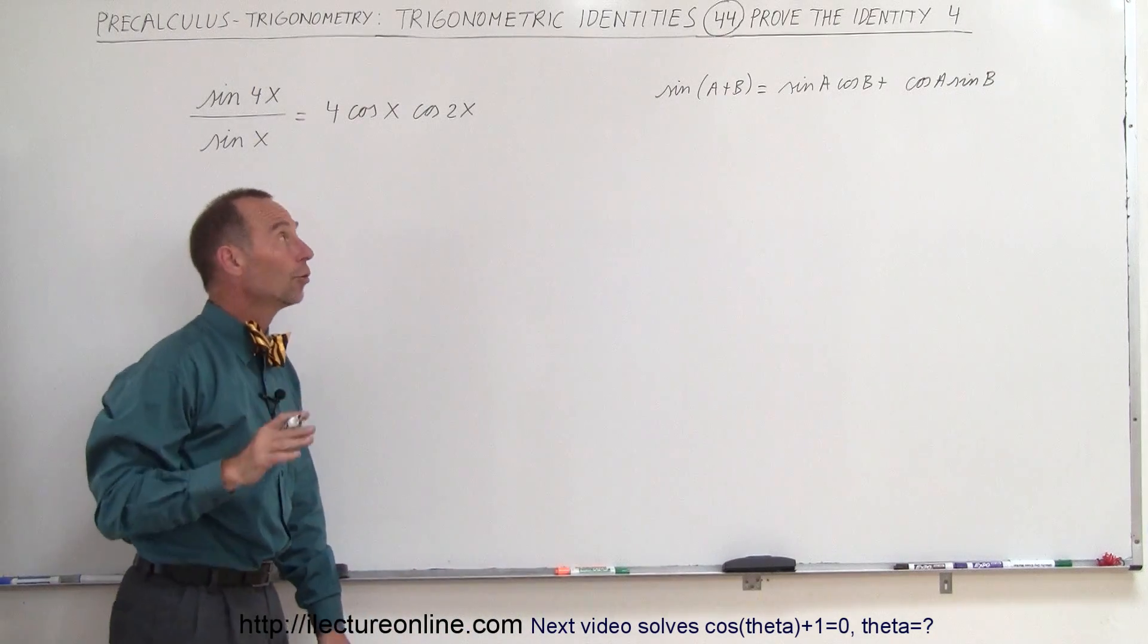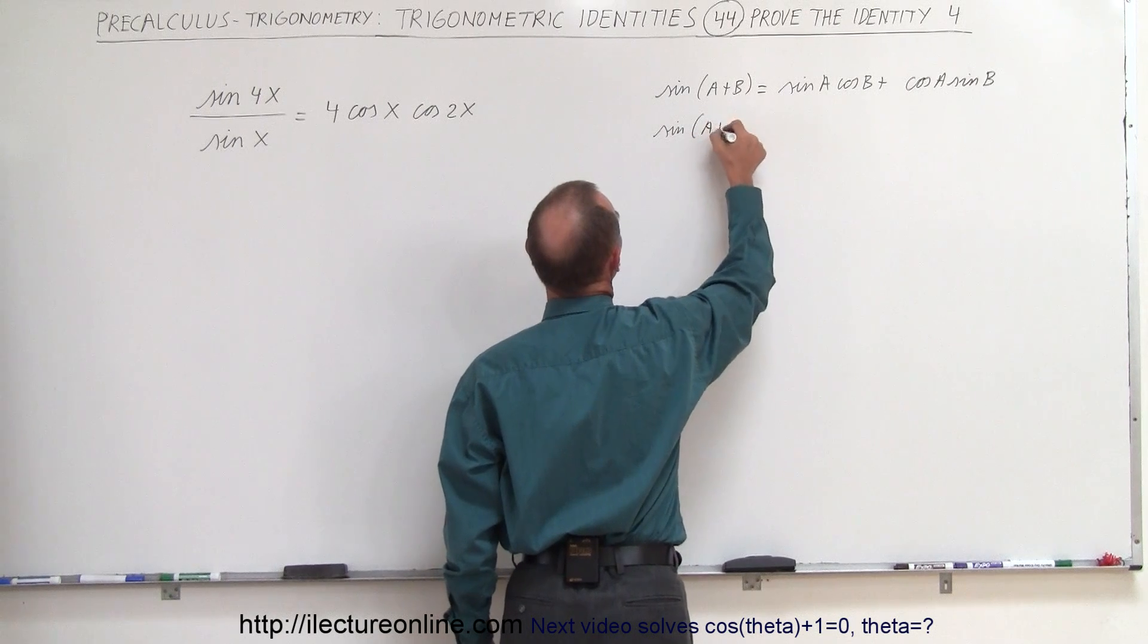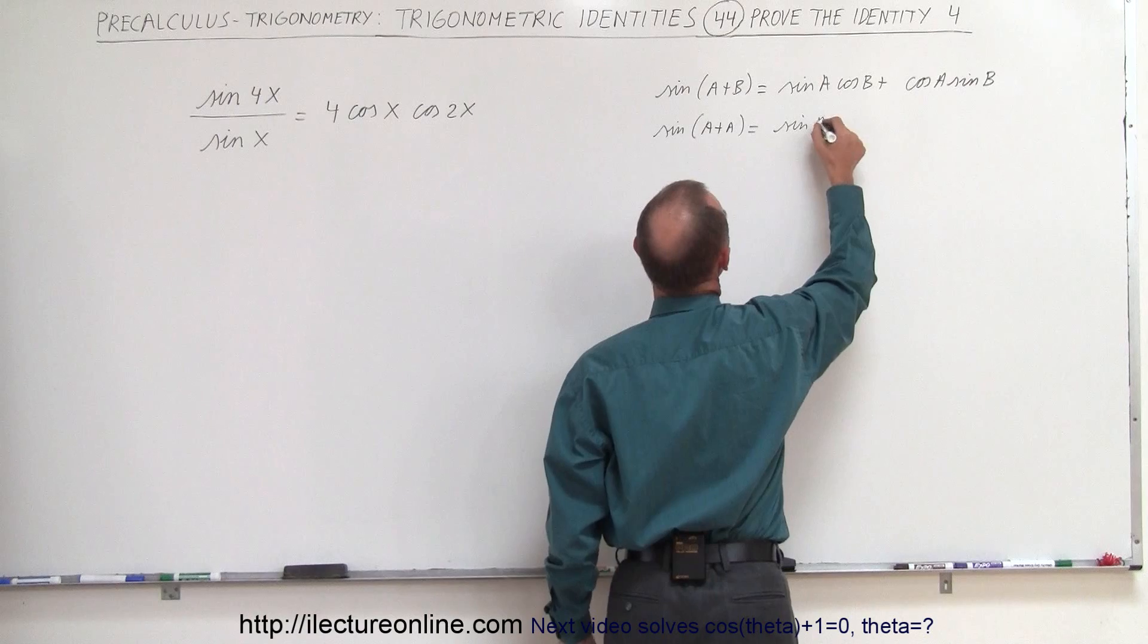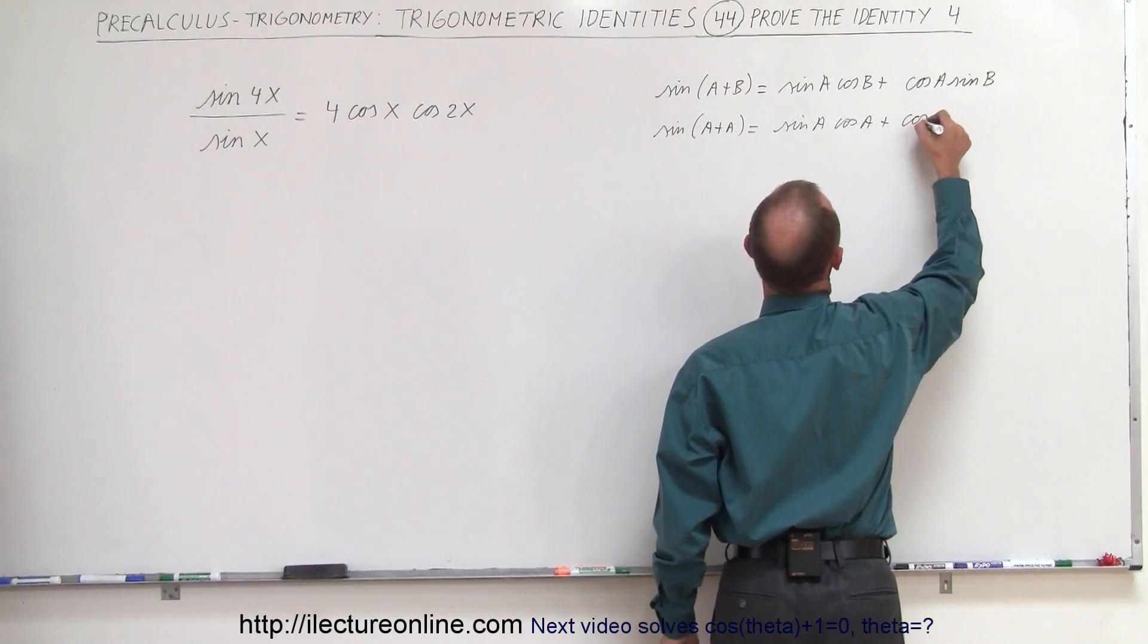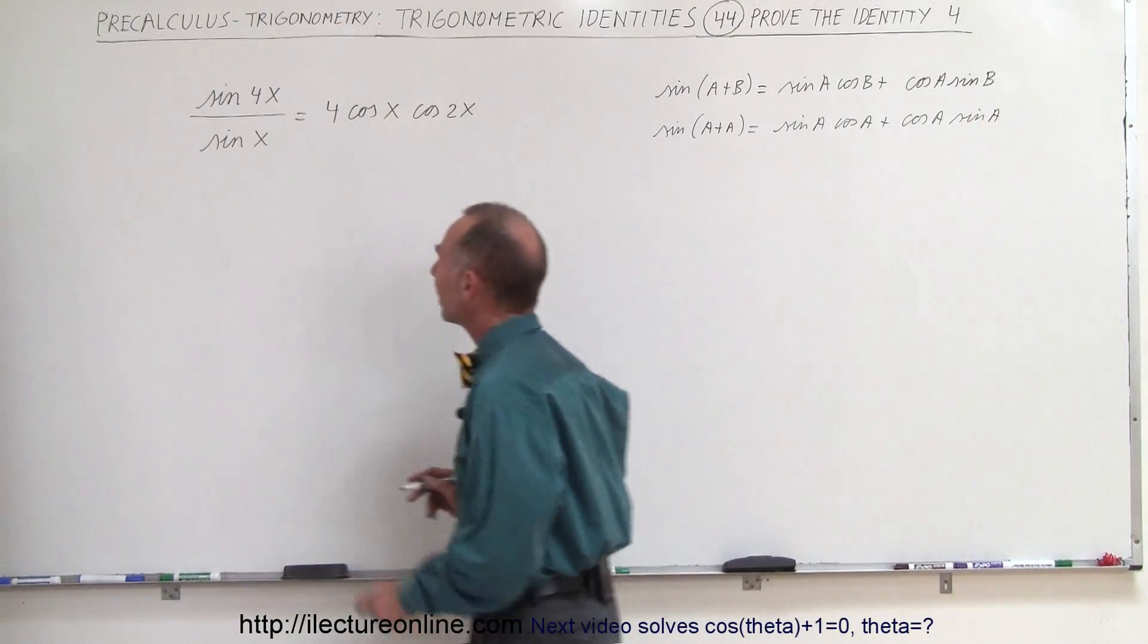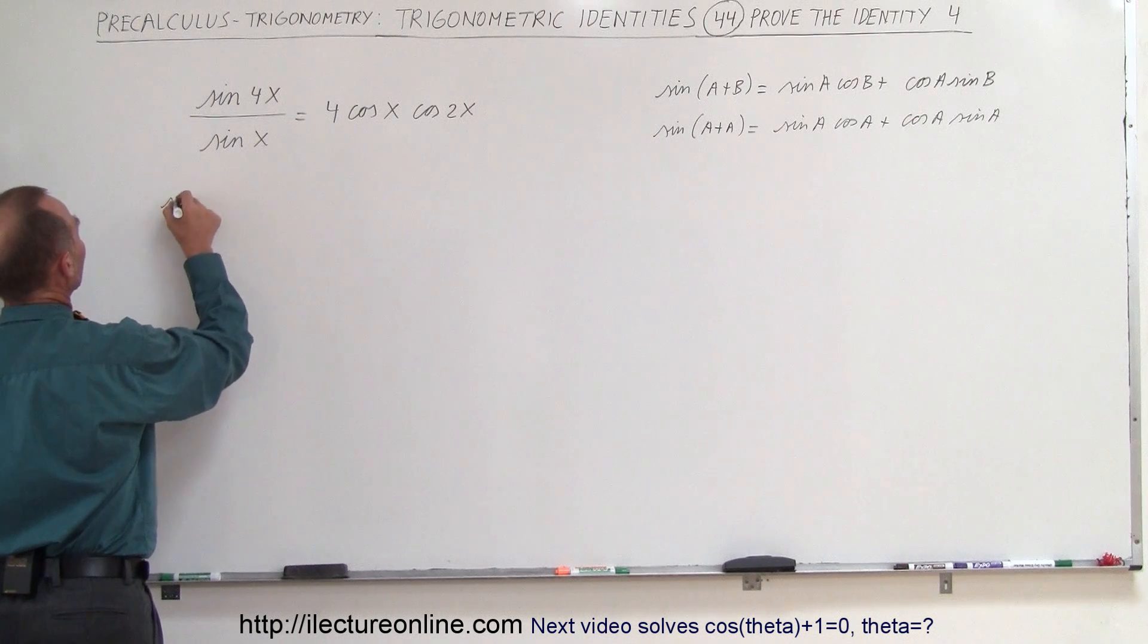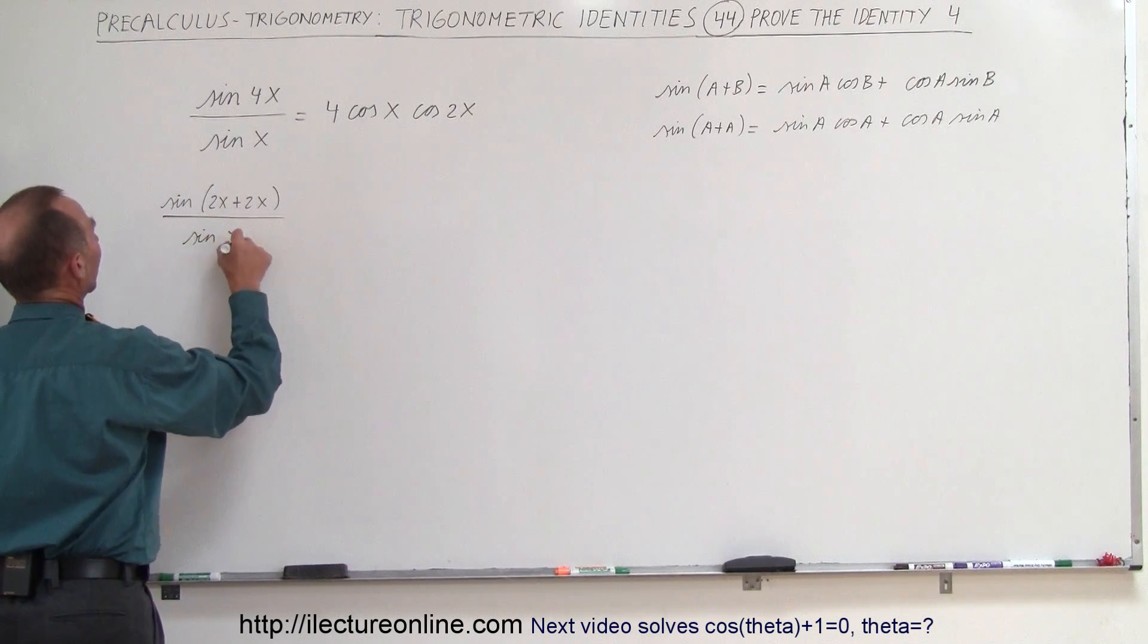Alright so, and then also realize of course that the sine of 2a, a plus a, can be written as sine a cosine a plus cosine a sine a. Alright, knowing that, let's go up here and let's rewrite the left side like this. We can write it as the sine of 2x plus 2x divided by the sine of x.